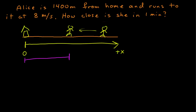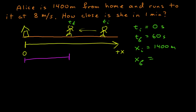Now I have a picture and a coordinate system. I'll list what I know and what I want to find, identifying two points in time. The first point in time is when she starts running, and I'll set t initial equal to zero. The final time is one minute later, so in seconds, t final is 60 seconds. Her initial position, x sub i, is 1400 meters. Her final position is unknown — I'll call that x — and that is what I want to find, since zero of my coordinate system is at the house.